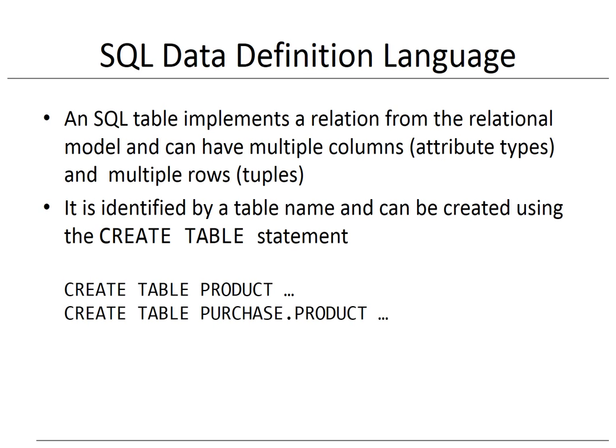Once we have defined a scheme, we can start creating SQL tables. An SQL table implements a relation from the relational model. It typically has multiple columns, one per attribute type, and multiple rows, one for each tuple. An SQL table can be created using the CREATE TABLE statement followed by the name of the table. The first example creates a table 'product' which will be assigned to the default scheme. The second example creates a table 'product' within the 'purchase' scheme. It is recommended to explicitly assign a new table to an already existing scheme to avoid any confusion or inconsistencies.